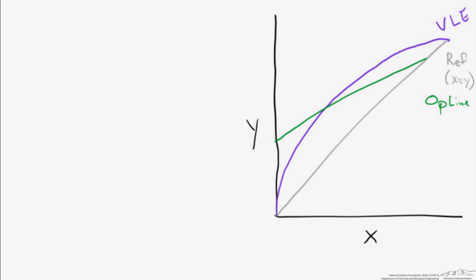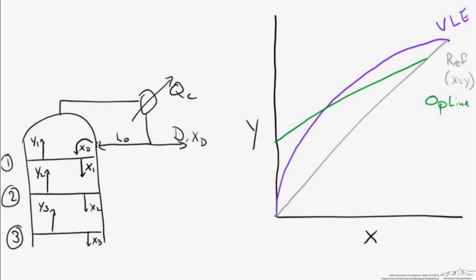Now to that, we're going to draw our operating line based on the derivation from the previous section. We draw our operating line based on what we know of the system and those material balances. Now let's come back and consider what's actually happening as we move through this column in terms of compositions. If we look at the very top of the column, we see the material coming back in from the reflux — this L sub 0 flow — has a composition of x sub D. For a total condenser, that's just the composition of your distillate.